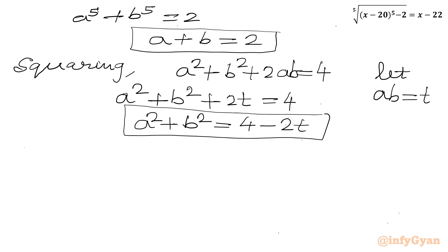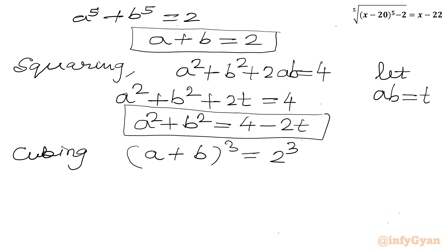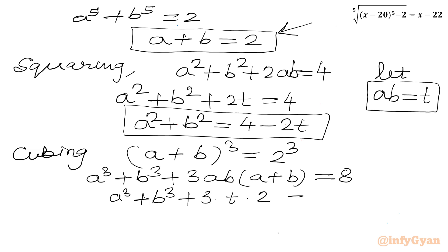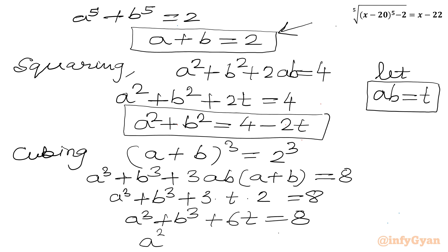Now I will consider cubing both sides of a plus b equal to 2. Using the cube formula: a cubed plus b cubed plus 3ab times (a plus b) equal to 8. Substituting a plus b equal to 2 and ab equal to t: a cubed plus b cubed plus 3t times 2 equal to 8, so a cubed plus b cubed plus 6t equal to 8, giving a cubed plus b cubed equal to 8 minus 6t.